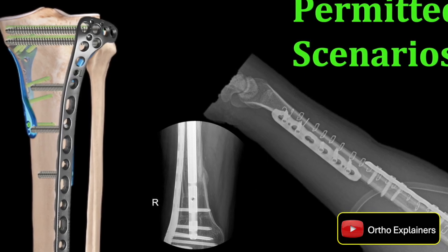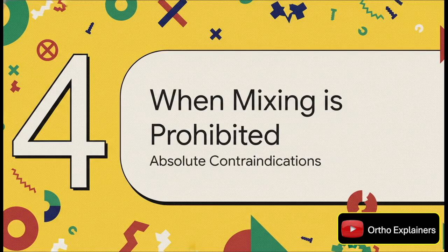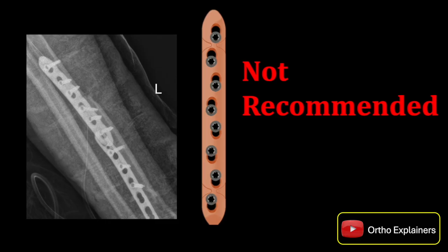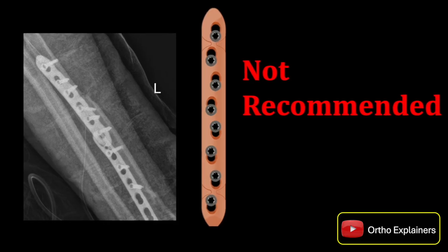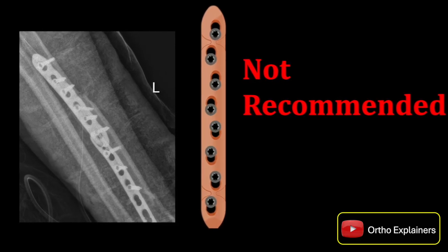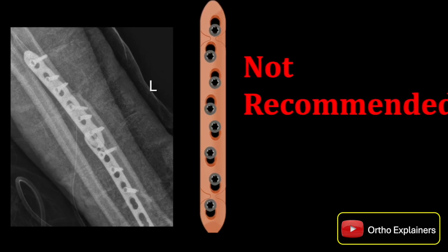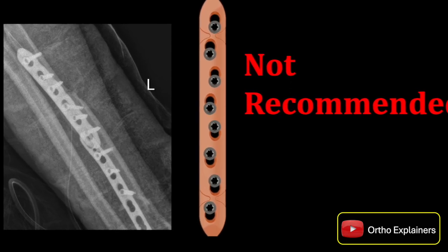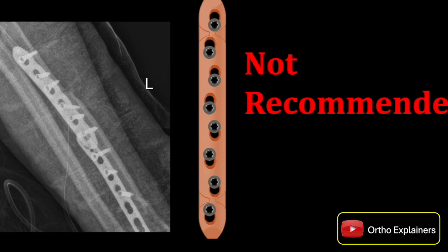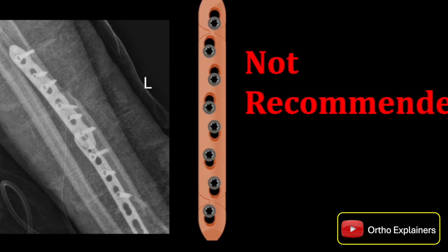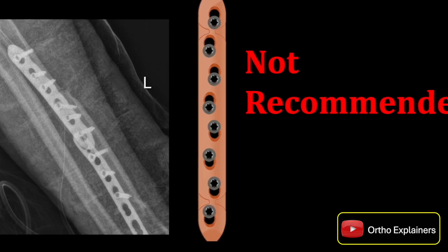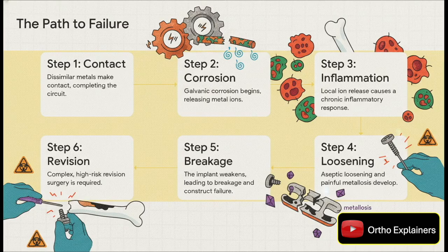In sharp contrast, let's look at the absolute contraindications — situations that will lead to construct failure. You must never use stainless steel screws in a titanium plate or vice versa. Never allow dissimilar plates to overlap, and never link them with wires or cables. Even microscopic contact is enough to complete that electrical circuit and kick off that destructive corrosion.